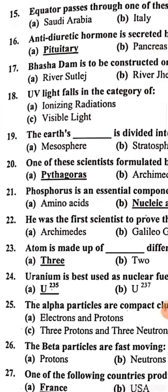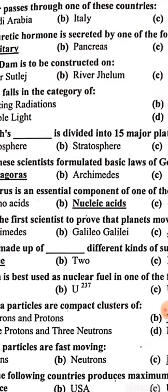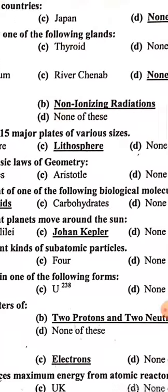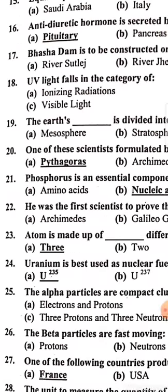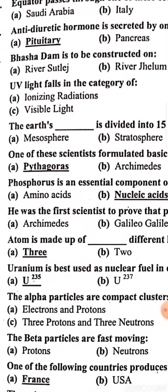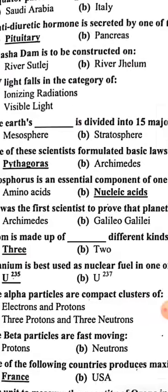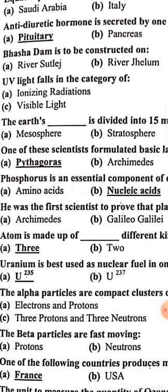The equator passes through one of these countries — the answer is none of these. Anti-diuretic hormone is secreted by the pituitary gland.